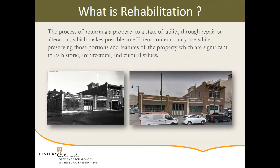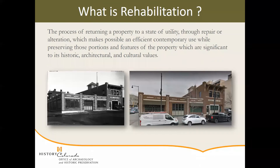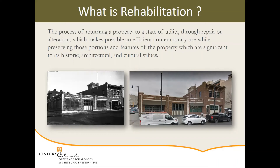Let's discuss rehabilitation since it is the most common treatment approach. It's the process of returning a property to a state of utility through repair or alteration, which makes possible an efficient contemporary use while preserving what makes the building significant — its architectural and historic features. Here we can see an example of a rehabilitation which is an automobile garage converted to office space. We're also going to post in the chat window some illustrated guidelines for these standards so you can follow along or get more specific questions answered. I'm going to go through all 10 standards as quickly as possible — check out that link for the guidelines if you would like more information.